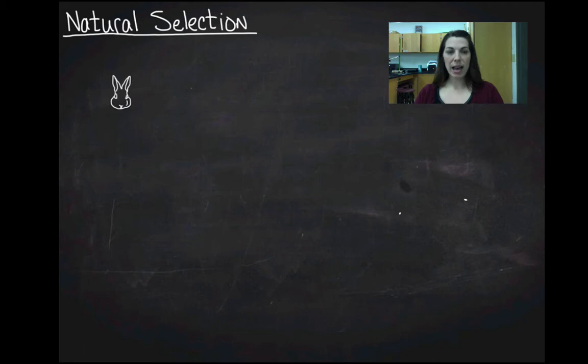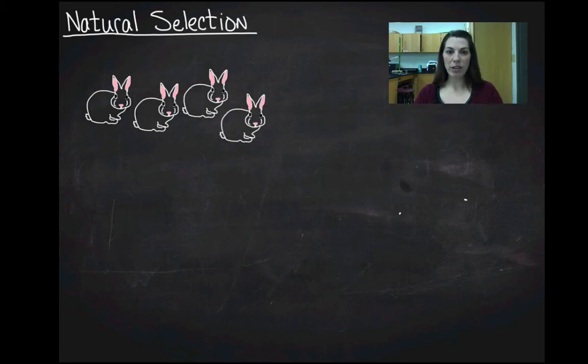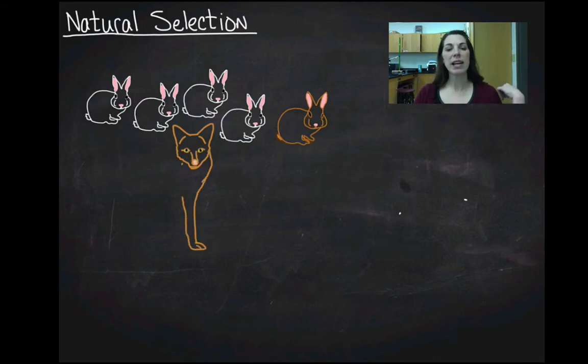So let's say that I have a population of rabbits and the most common phenotype in the population is to have white fur, but I also have some rabbits that have brown fur. And let's say that the predator in this ecosystem is a coyote.